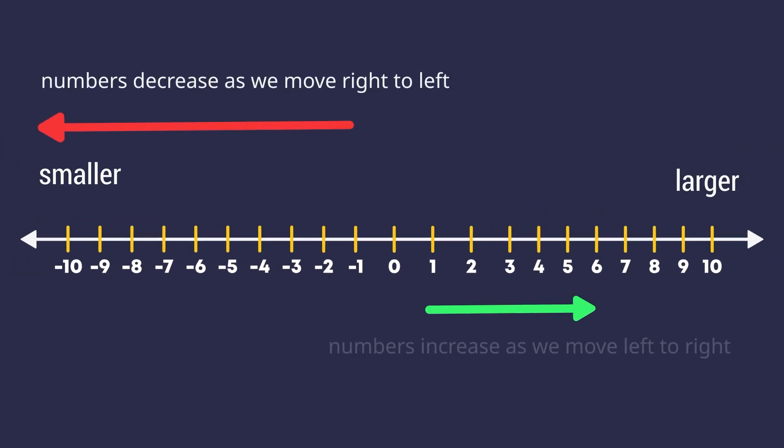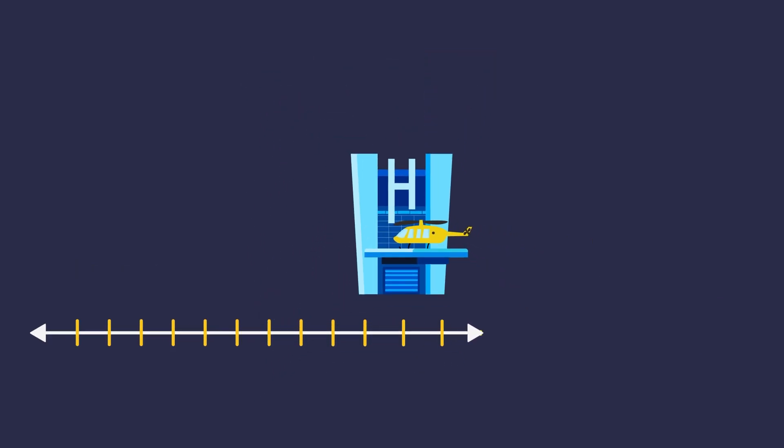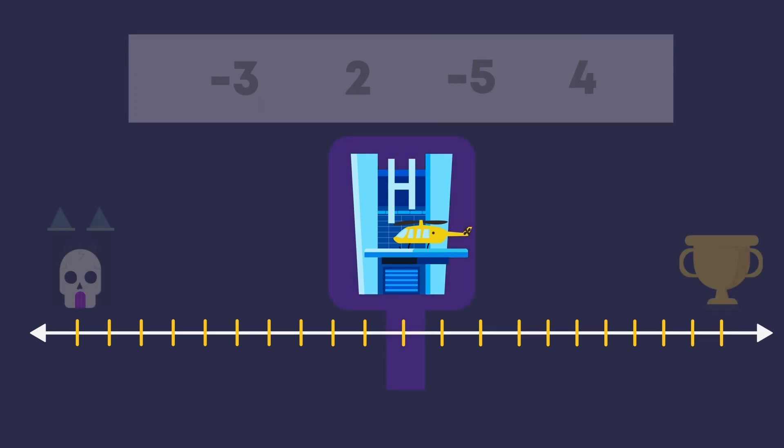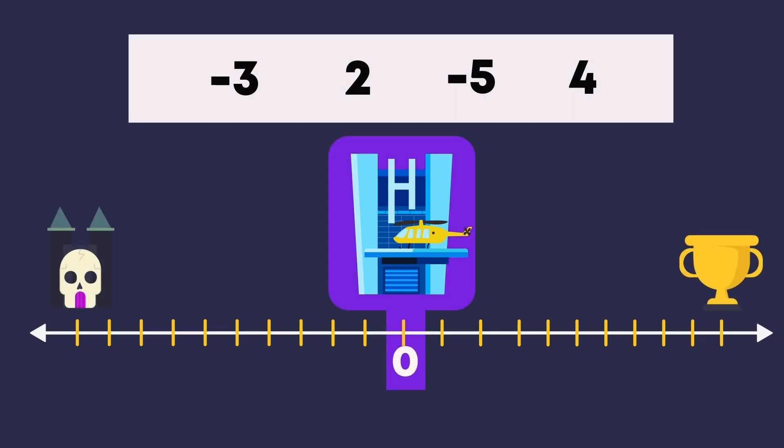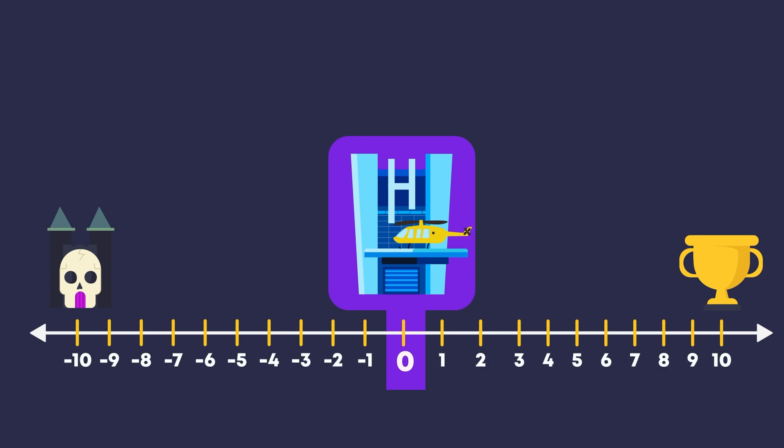We represent integers on the number line to compare their values. Imagine a big line drawn outside your superhero headquarters. This line has a zero in the middle. Positive numbers move to the right towards the prize, where negative numbers move to the left towards the villain's hideout. All integers can be presented on the number line in this order.